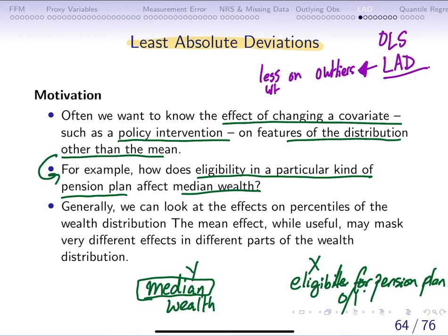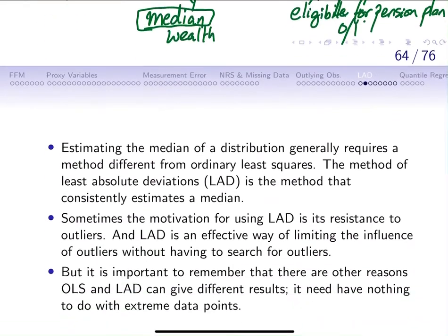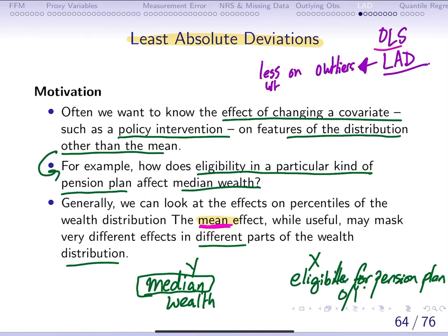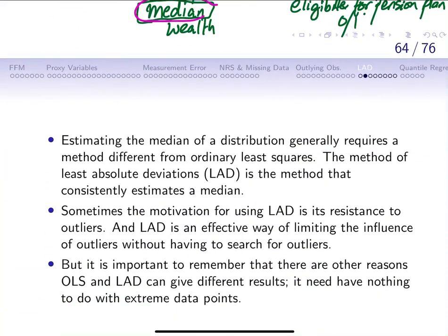We can also look at different parts of the wealth distribution. The reason we want to look at the median is that the mean, because of outlying observations — very wealthy people or people who have very little wealth — can influence the average effects that we typically capture using OLS estimation. So we want to rely on a different technique that pays less attention to outlying observations and focuses on the median effects on the dependent variable.